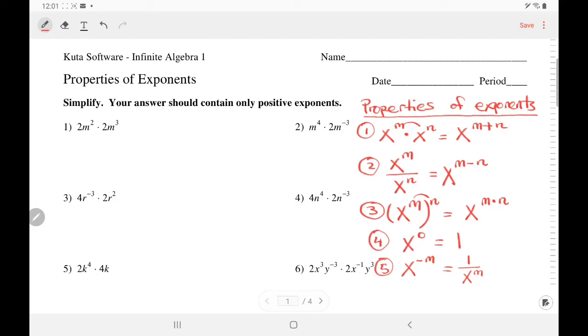Any number to the power 0 is 1. In property 5, a negative exponent means reciprocal, or x to the power of m goes to the denominator.